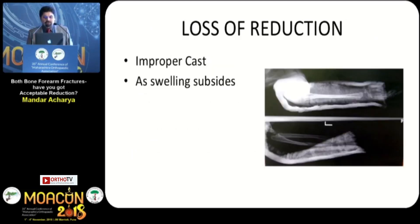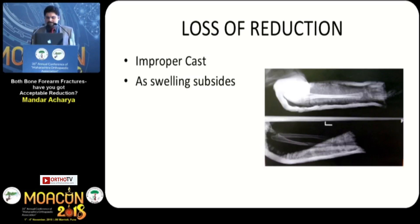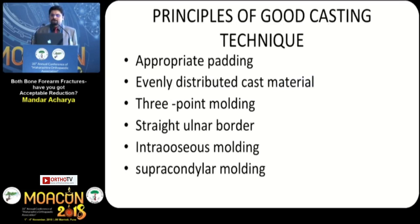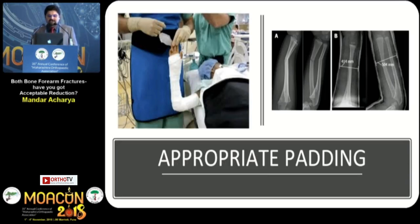This is a case where the cast is not properly fitting — the cast index as shown by Samir is not adequate. As the swelling subsides, this fracture tends to go into angulation. The principles of good casting technique include appropriate padding, evenly distributed cast material, three-point molding, straight ulnar border, interosseous molding, and supracondylar molding.